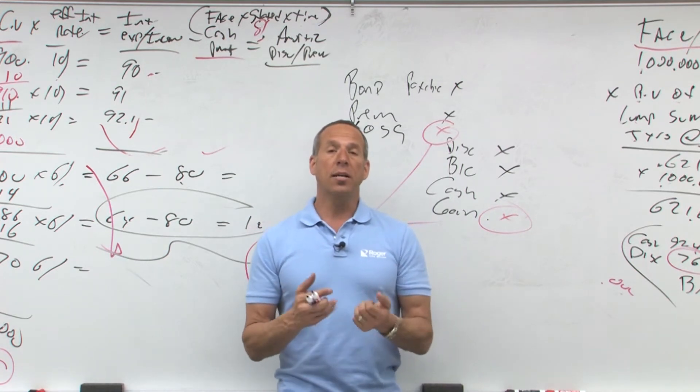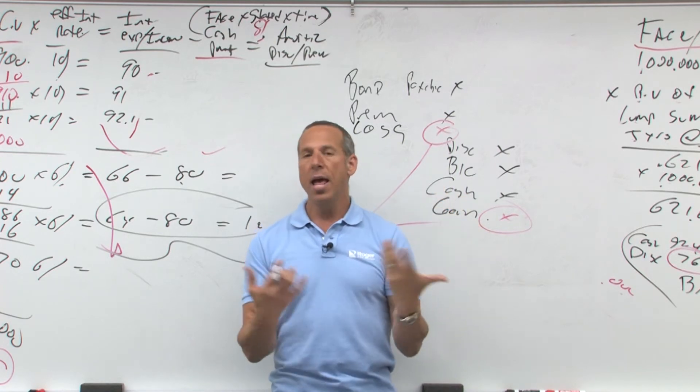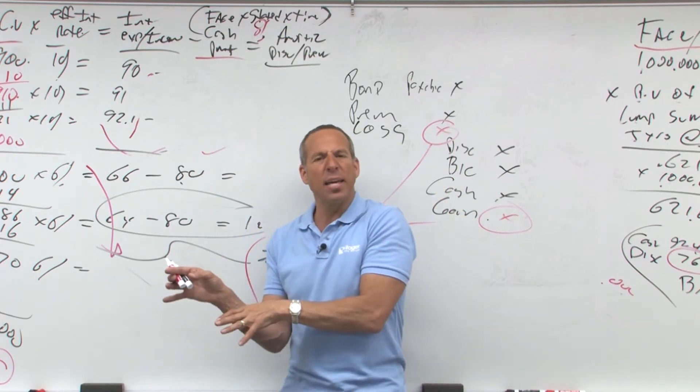Well what happened is companies would buy back their bonds at huge gains when interest rates were fluctuating quite a bit and they would bury it in the income statement. So they said, let's separate it out and make it extraordinary.